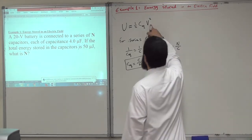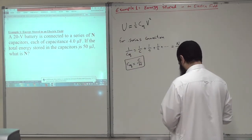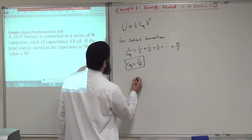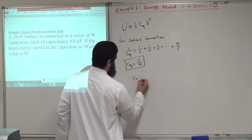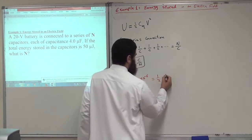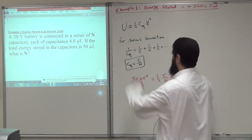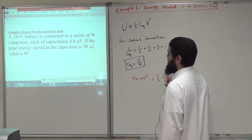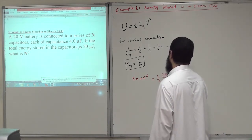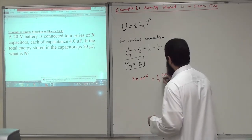We know V and U, the potential energy stored in the electric field. So: 50 × 10⁻⁶ joules equals one half times C-equivalent, which is C over N, multiplied by V squared, which is 20 squared. C is 4 microfarad, so 4 × 10⁻⁶. The 10⁻⁶ cancels on both sides.